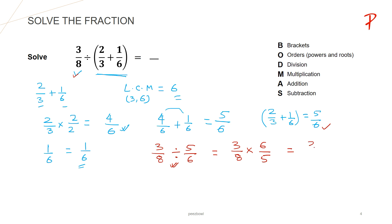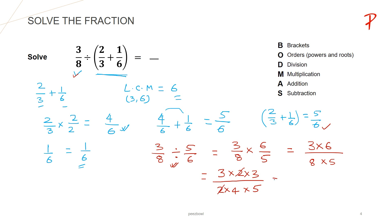So this gives us 3 multiplied by 6 divided by 8 multiplied by 5. Let us simplify: I write 3 as it is, 6 becomes 2 multiplied by 3, 8 becomes 2 multiplied by 4, then multiplied by 5. The 2 in the numerator and the 2 in the denominator cancel each other, leaving 3 multiplied by 3 at the numerator's place, which is 9, and 4 multiplied by 5 at the denominator's place, which is 20.